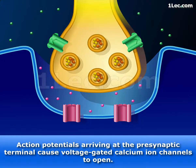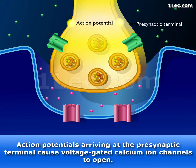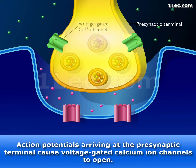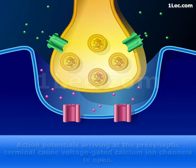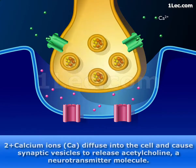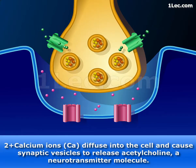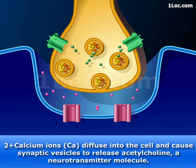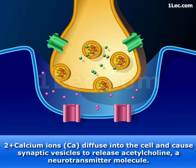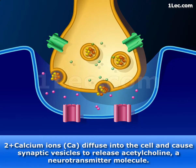Action potentials arriving at the presynaptic terminal cause voltage-gated calcium ion channels to open. Calcium ions diffuse into the cell and cause synaptic vesicles to release acetylcholine, a neurotransmitter molecule.